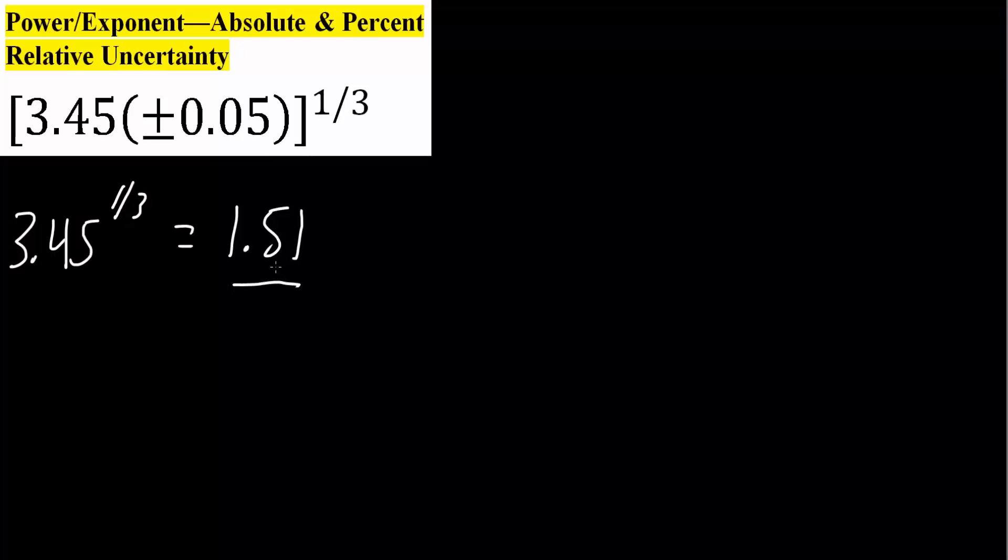Now we will do the relative percent uncertainty. So what we do here is we take this 1 third and move it to the front. We multiply this by 0.05, divided by 3.45, and then finally we multiply by 100%. Now this will give us the relative percent uncertainty, which will come out to be 0.5%.